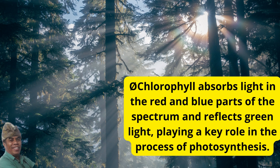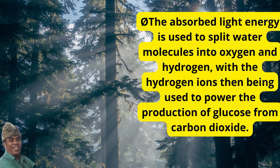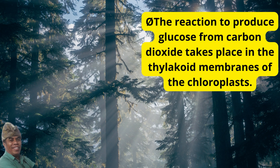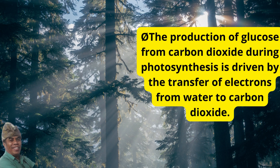Chlorophyll absorbs light in the red and blue parts of the spectrum and reflects green light, playing a key role in the process of photosynthesis. The absorbed light energy is used to split water molecules into oxygen and hydrogen, with the hydrogen ions then being used to power the production of glucose from carbon dioxide. This reaction takes place in the thylakoid membranes of the chloroplasts and is driven by the transfer of electrons from water to carbon dioxide.